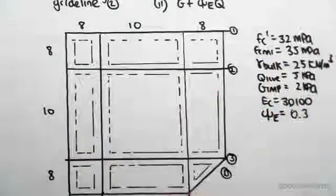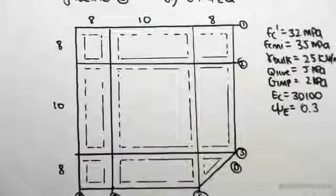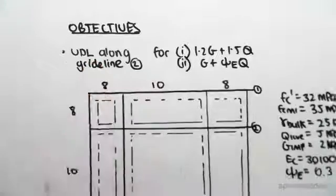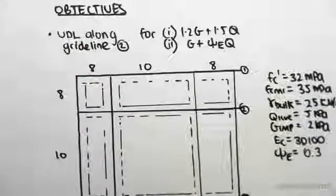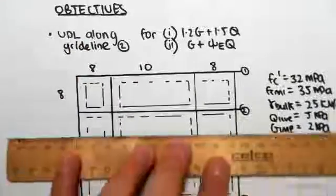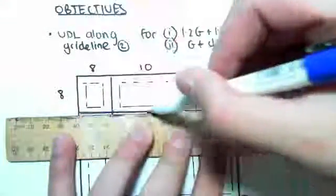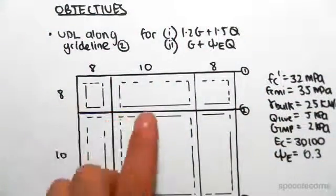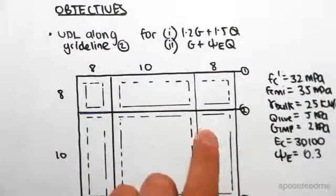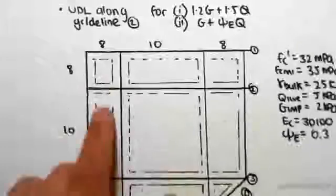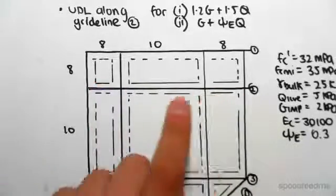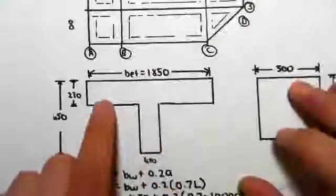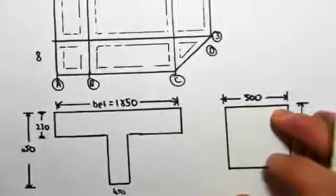All the properties are on the side here and we need to be looking at them. We want to find the equivalent UDL along grid line 2, so that's the first thing we need to be doing. Here's grid line 2. If you were to take a section through this grid line, you would get a T-beam — we have the slab on either side of the beam and then the beam itself, so we're going to get a T-beam.